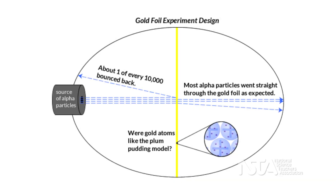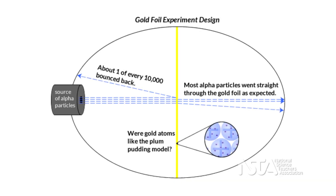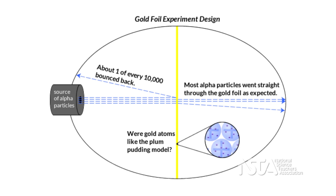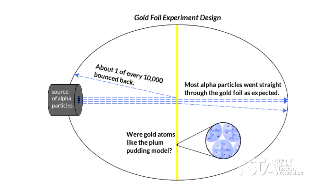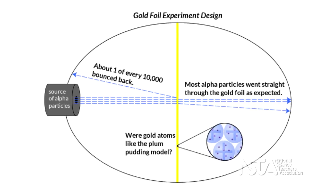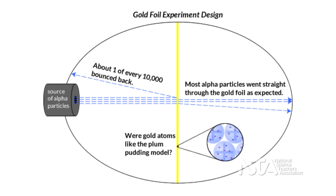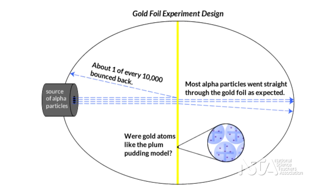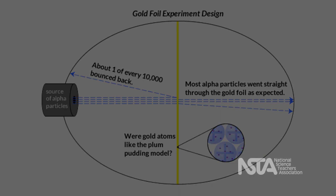The evidence that students are discussing comes from a simulation of Rutherford's Gold Foil Experiment. In Rutherford's Gold Foil Experiment, he shot positively charged alpha particles at a thin sheet of gold foil. He saw that most of the particles went straight through the foil. However, about one out of every 10,000 particles bounced back close to the direction it came from.